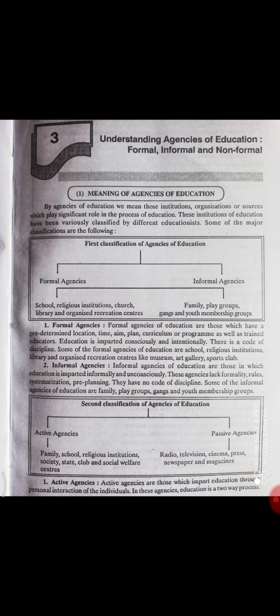بہت سارے educators نے agencies of education کو classify کیا ہے۔ پہلی classification یہ ہے کہ ایک type ہے formal agencies of education اور دوسرا ہے informal agencies of education۔ Agency کا مطلب یہ ہے کہ یہ وہ ادارے، organizations یا sources ہیں جن کا ایک خاص رول ہے — they play a significant role in the process of education.